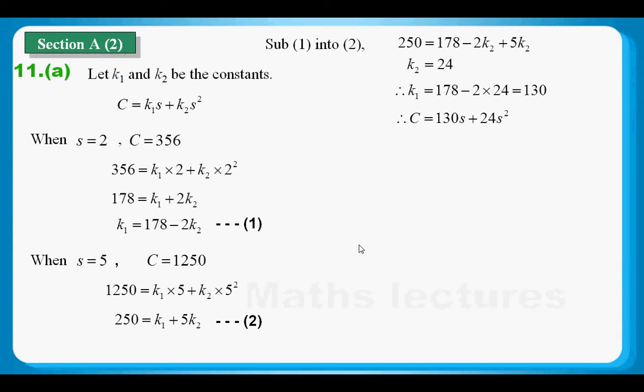And now I can set up the equation which can help us to calculate the cost. When the parameter s equals 6, we have the cost C equals $1,644. Remember the unit.